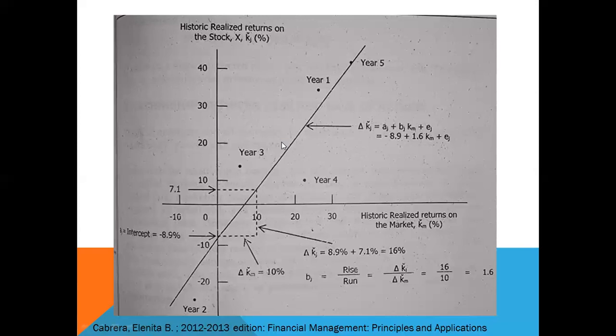Also, in practice, one would use the least squares method for finding the regression coefficients a and b. This procedure minimizes the squared values of the error term. It is discussed in statistics courses.